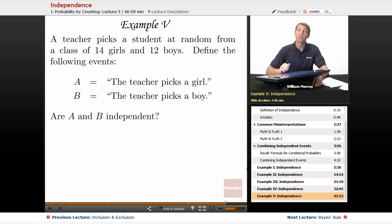In our last example, we have a teacher picking a student at random from a class of 14 girls and 12 boys. So our two events here are A being the event that the teacher picks a girl and B is the event that the teacher picks a boy. The question is, are A and B independent?